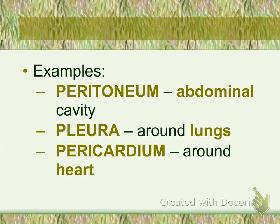Unlike mucous membrane, serous membrane has a different name depending on the location. For the abdominal area, the name is peritoneum; around the lungs it is the pleura; the covering around the heart is called the pericardium. Those are the three we concentrate on in this unit. In the skeletal unit, bones have a serous membrane covering called periosteum; in the nervous system, the brain is covered with perineurium; and muscles are covered with perimycium. Notice that the names of the serous membrane change with the location.